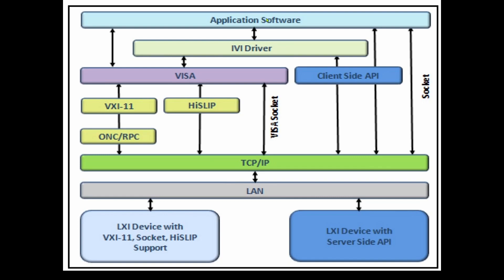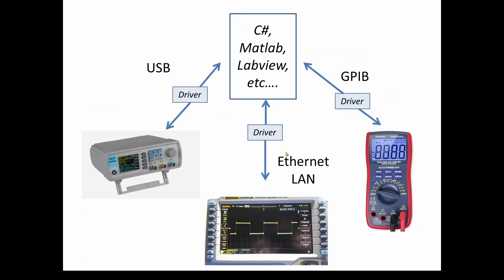Those are some of the basic concepts we're going to deal with when interfacing with our devices. Here's an overview: you've got your application software — ours is going to be C# — your IVI driver utilizing VISA or client-side API, and TCP/IP local area network. You can start to see how these different concepts work together to allow you to have a very simple application on your computer that deals with all the different types of devices, communication protocols, and different manufacturers, to allow you to much more simply control your devices. We're going to use that when we finish programming our devices — specifically our oscilloscope and our function generator — so that we can control them using our C# application.